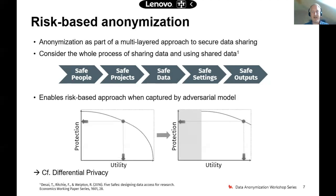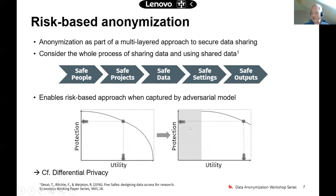Safe Outputs means ensuring that published results — for example in scientific articles — do not breach privacy or leak sensitive information. Applying this multi-layered framework can shift the risk-utility curve toward a scenario where high utility and high protection are simultaneously achievable, because the additional protection layers address residual risks beyond data-level anonymization alone.